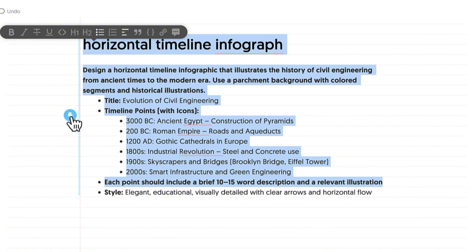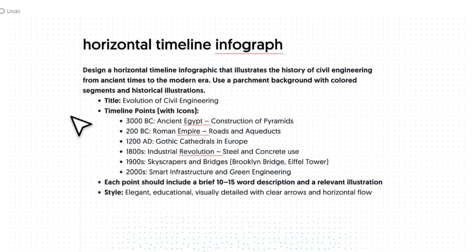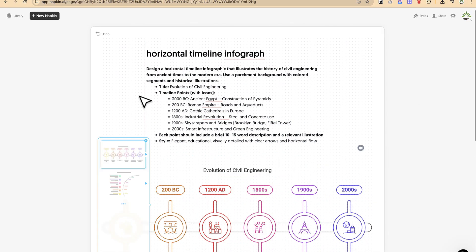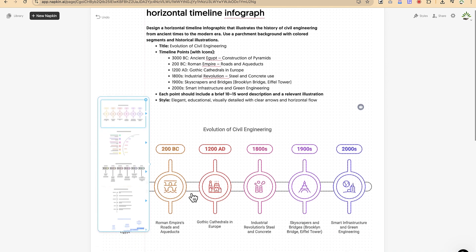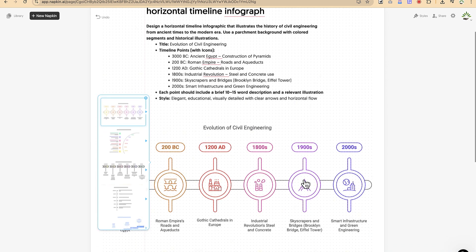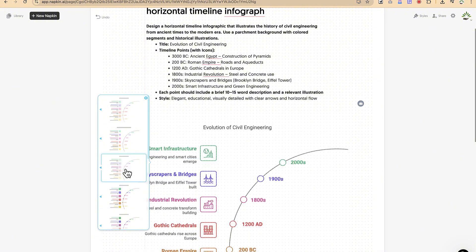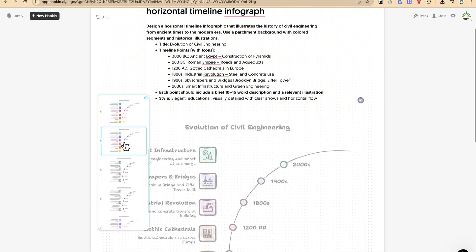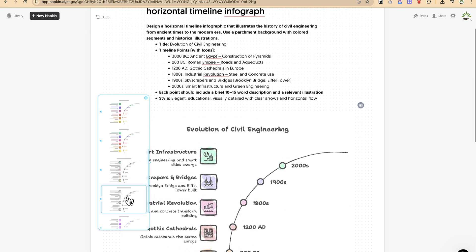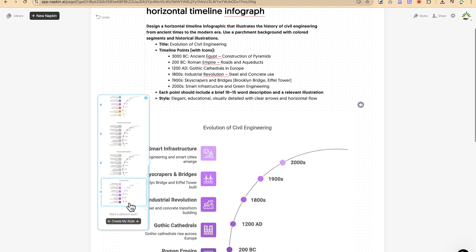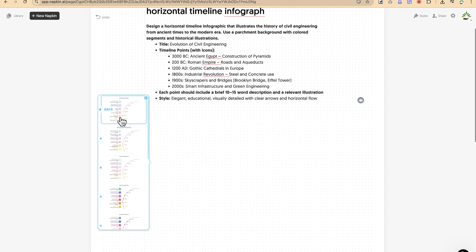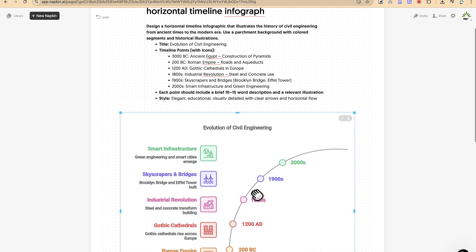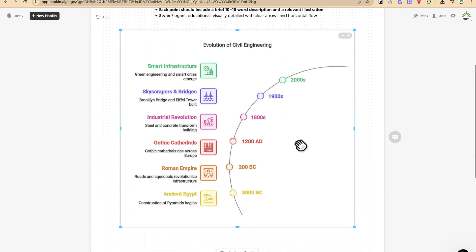Select all the text, then click 'Generate Visual.' Within a few seconds it generates the visuals. Wonderfully, you can see it has created a diagram showing the evolution of civil engineering over the years. You can try other variations — these are fantastic ones it has generated. You can change the content and all the elements, regenerate, or use the ones provided. You can download it as well.